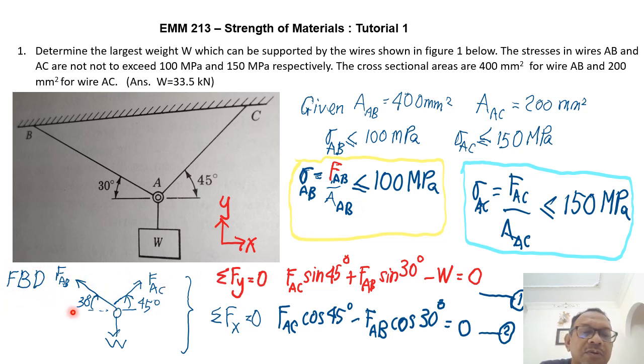I know that stress equals to force divided by area, and that must be less than 100 MPa. And for AC, force AC divided by area AC, and that should be less than 150 MPa. So is there anything else that we can obtain from here? I think we've done. So we've captured all the data from the questions in this form that we know. We can use it in trying to find the solution to the question. So after that, I draw the free body diagram. So I took the point A. This is point A.